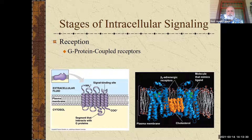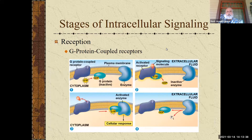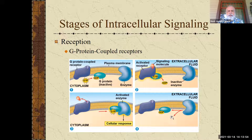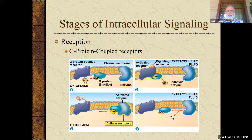They are called G protein coupled receptors because of the way they work, which we'll show on this next slide. Here is a walk-through, steps one through four, of how this works. You don't need to understand every little nuance, but here you have a G protein that's inactive just sitting there, and you have the G protein coupled receptor on the outside — the protein that is actually going through the membrane. We've got to find a way to activate this thing.